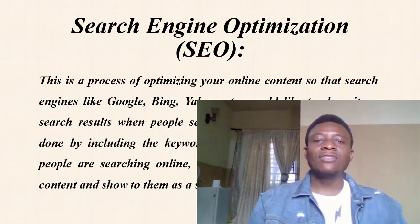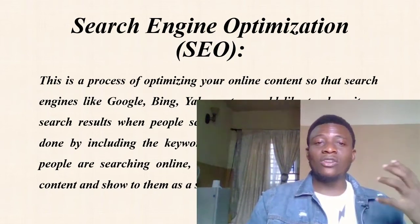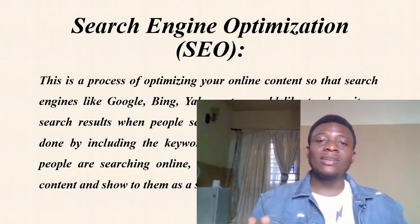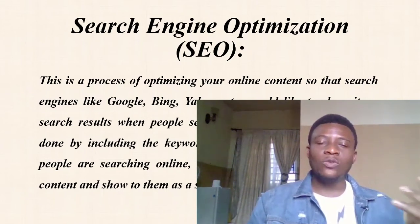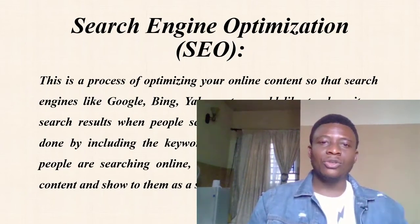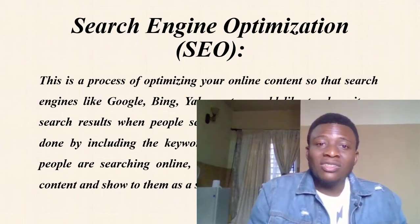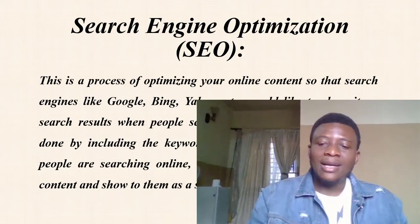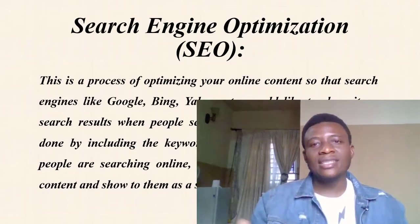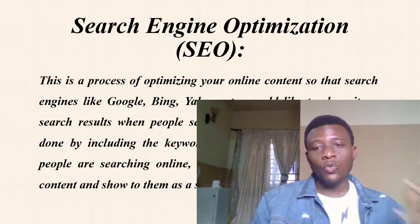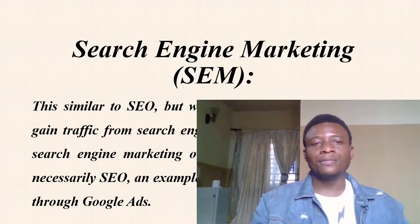If you want to rank for a particular keyword so that when Google, Bing, or other search engines scope a keyword that's related to your own, yours can also possibly show. This happens when people are searching for content online with a related keyword that you want to rank for.